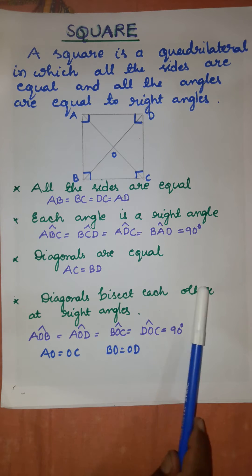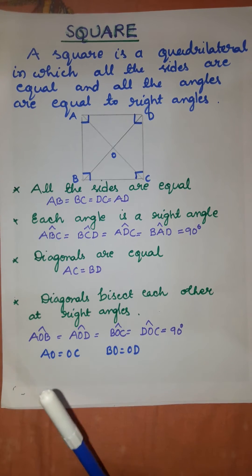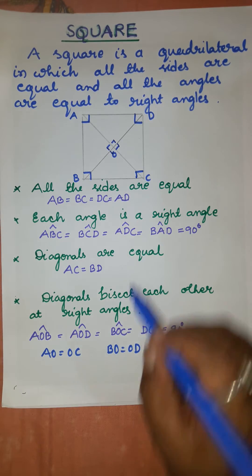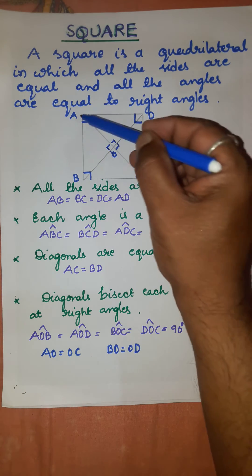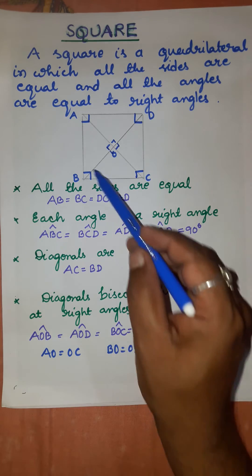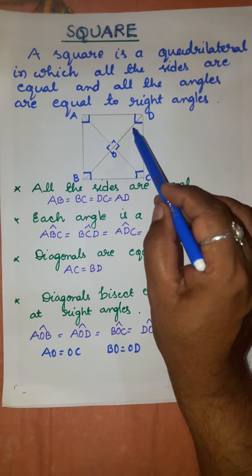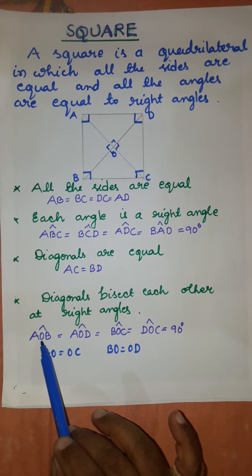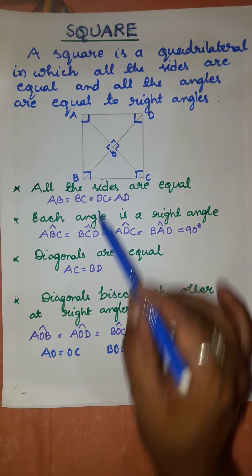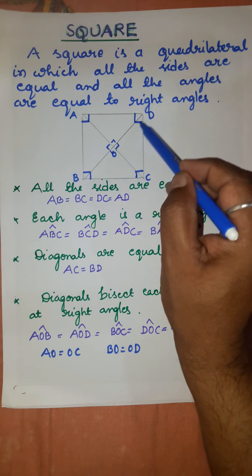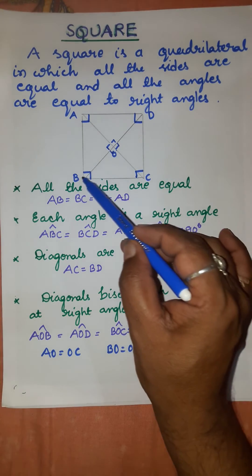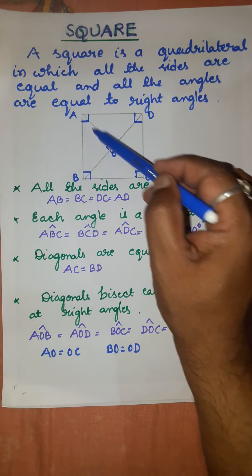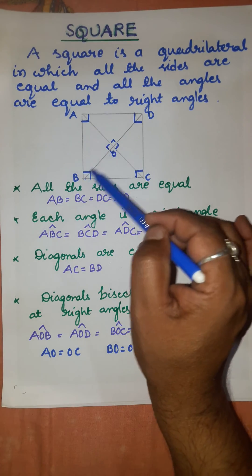The diagonals bisect each other at right angles. When they bisect each other at point O, they make 90 degrees. Angle BOA, angle AOD, angle BOC, and angle DOC are each equal to 90 degrees. Also, the bisected parts of the diagonals are equal: BO is equal to OD, and AO is equal to OC.